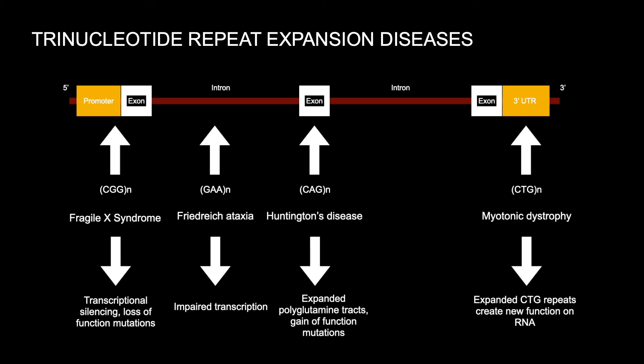Huntington's disease has a trinucleotide repeat of CAG with an autosomal dominant inheritance. Myotonic dystrophy has CTG repeats with an autosomal dominant inheritance. Fragile X has CGG repeats with an X-linked dominant inheritance. Friedrich ataxia has GAA repeats with an autosomal recessive inheritance.